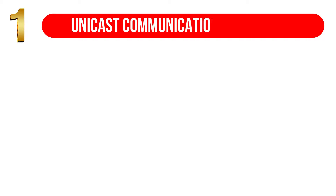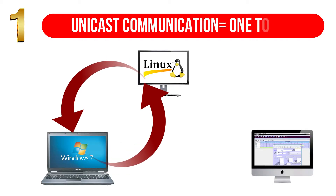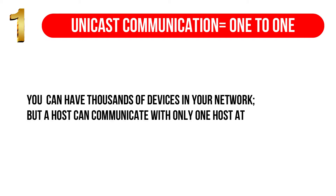The first one is called Unicast communication. In this type of communication, one single device is receiving and sending packets to one single device. So here we can have a bidirectional communication, but between two single devices.